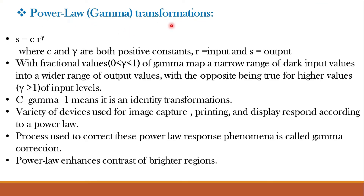Next is the power law or gamma transformation function, given by S = C · R^γ, where R is the input, S is the output, C is a constant, and γ (gamma) is the power law exponent. When gamma is between 0 and 1, it maps a narrow range of dark input values into a wider range of output values, similar to log. When gamma > 1, the opposite is true. When both C and gamma equal 1, it is an identity transformation. A variety of devices used for image capturing, printing, and display respond according to a power law, and correcting this is called gamma correction.